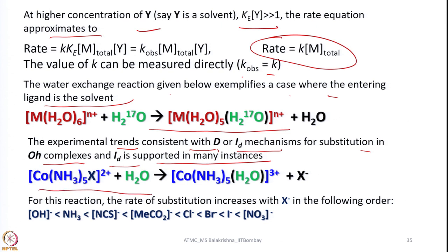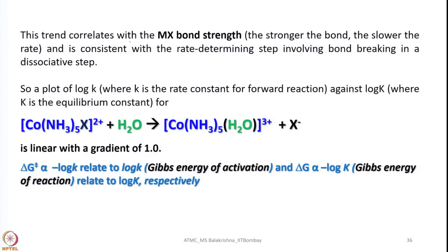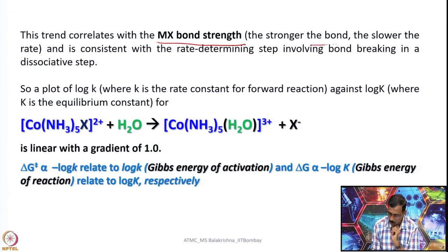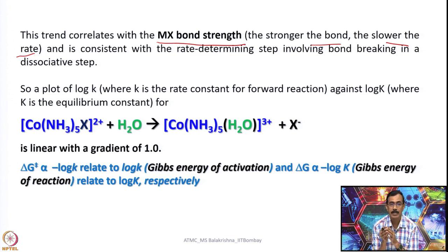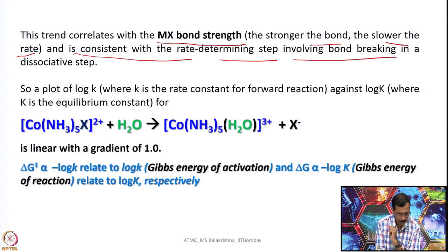For this reaction, looking at the rate of substitution increases in a specific order for various anions. The trends correlate with the MX bond strength — you should remember that how stable a complex is also depends on the bond strength of that particular bond. The stronger the bond, the slower the rate, because it takes more time for the leaving group to depart from the metal coordination sphere. This is consistent with the rate determining step involving bond breaking in a dissociative step. Bond breaking is very important in dissociative steps, whereas bond making with the entering ligand matters in associative mechanisms.